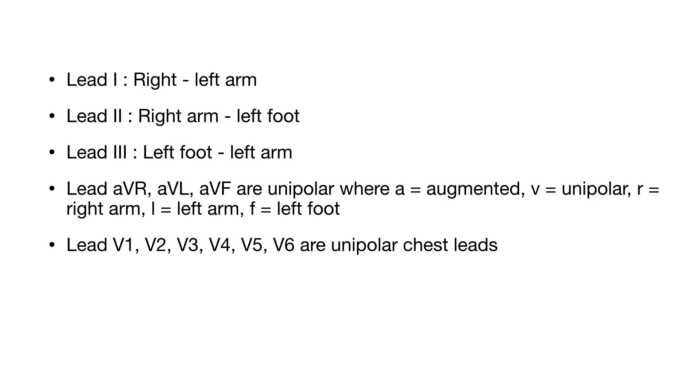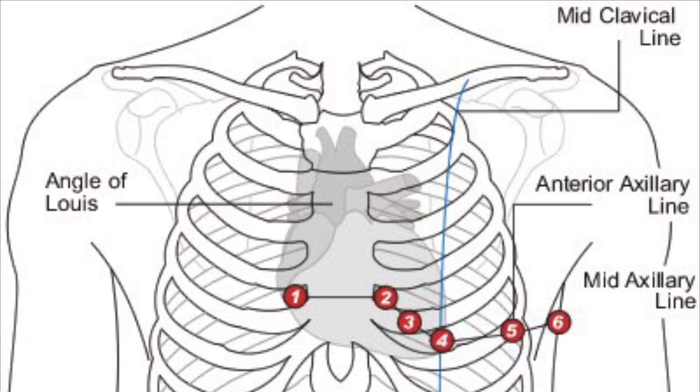Leads V1, V2, V3, V4, V5, and V6 are unipolar chest leads. Before we move further, we have to understand the position of chest leads. Lead V1 is situated at right 4th intercostal space just to the right of the sternal border. V2 at the left 4th intercostal space at left sternal border. V4 over the 5th intercostal space at mid clavicular line. Lead V3 between lead V2 and lead V4. Lead V5 on anterior axillary line at same level as lead V4. And lead V6 on mid-axillary line at the same level as lead V4 and lead V5.